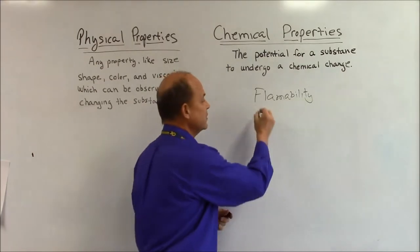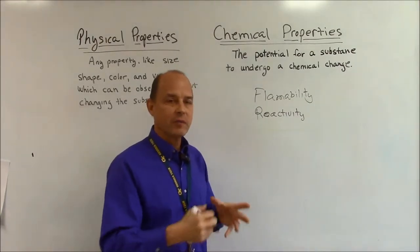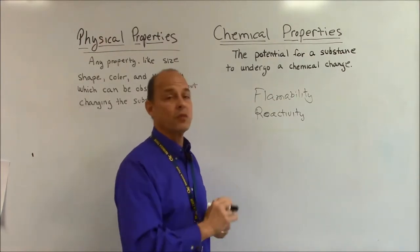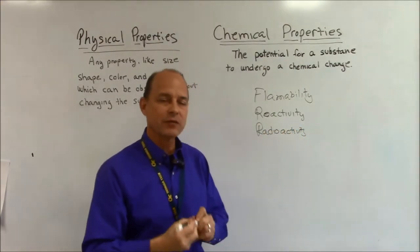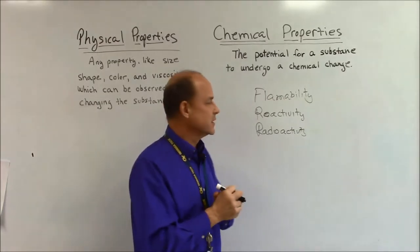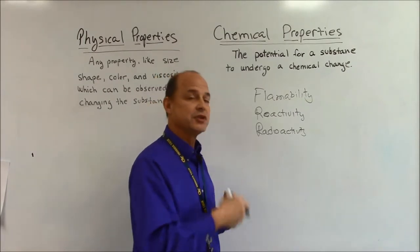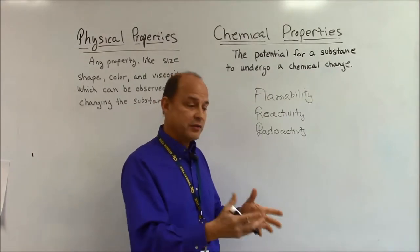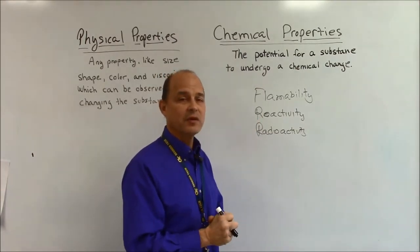A couple of other important examples. Reactivity — like when you put metal sodium in water and it explodes. Metal sodium just sitting there is not going to explode, but it has the potential that if you put it in water, it will explode. And also radioactivity — that's when something goes nuclear, when the atom splits, when the uranium atom splits and divides into two other substances. Radioactivity is a chemical property: it has the potential to split, and that's why radioactive is a chemical property.